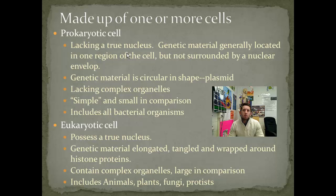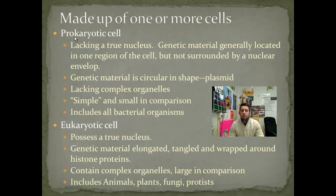In a prokaryotic cell, the genetic material isn't membrane bound. The genetic material in the nucleoid region is circular in shape. It has little plasmids that can be used in biotechnology for splicing and gene insertion — it's not the same shape as the chromosomes in a eukaryotic cell. Prokaryotes don't have complex organelles; they don't have an endoplasmic reticulum or a Golgi apparatus like a eukaryotic cell does. So for that reason they're considered simple — though all cells are pretty complex, prokaryotic cells are simpler by comparison.